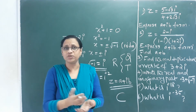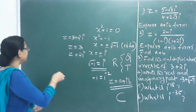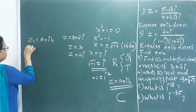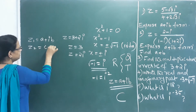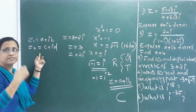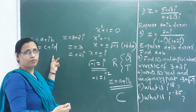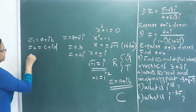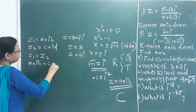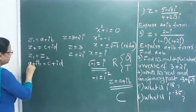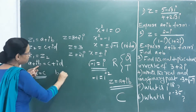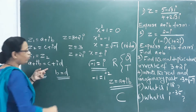This topic is the equality of complex numbers. If Z₁ = a + ib and Z₂ = c + id, then Z₁ = Z₂ means a + ib = c + id. The condition for equality is: real part equals real part (a = c) and imaginary part equals imaginary part (b = d).